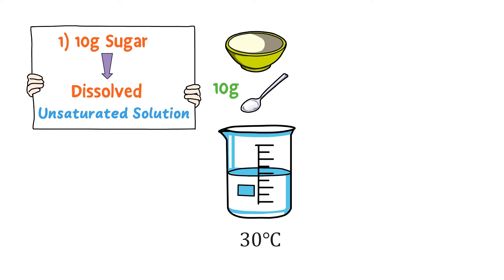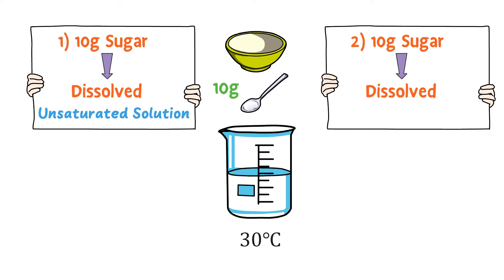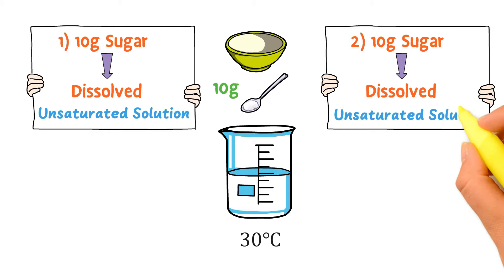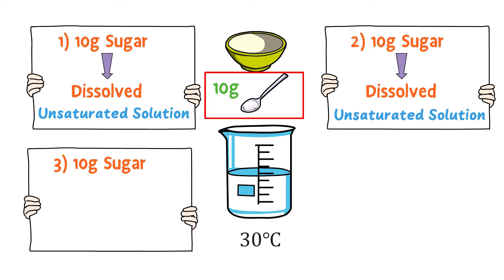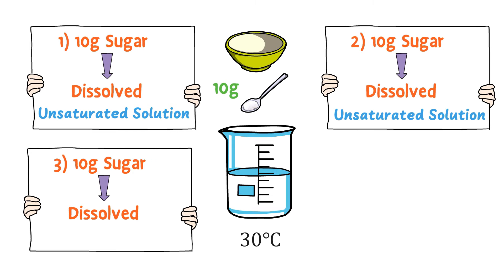Now consider that I add 10 grams more sugar to this solution. The water easily dissolves this added sugar. We know that there are now 20 grams of sugar in this solution, but still it is an unsaturated solution. If I add 10 grams more sugar and the water dissolves it again, this solution is still unsaturated.